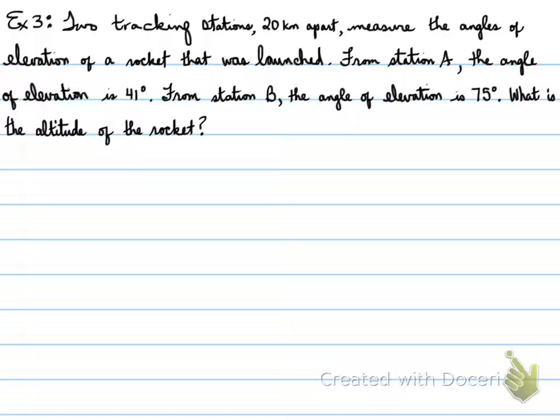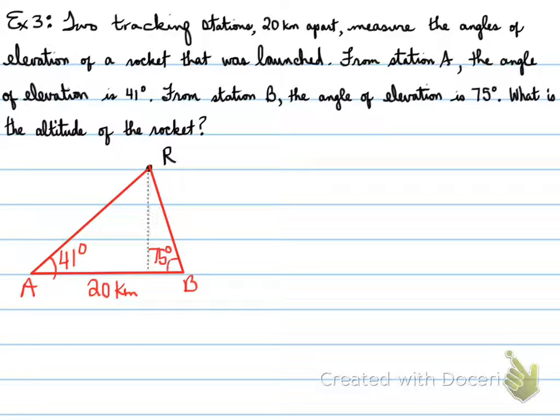So what we need to do is draw this. So two tracking stations 20 kilometers apart and a rocket somewhere up above. That rocket's angle of elevation from one part of the rocket is 41 degrees. The angle of elevation from the other station is 75 degrees. So the height represents the altitude of the rocket. So that creates a right angle to the base of this triangle.